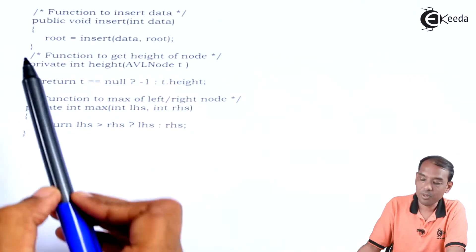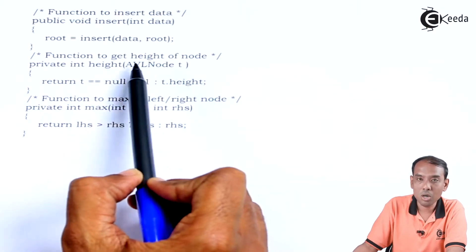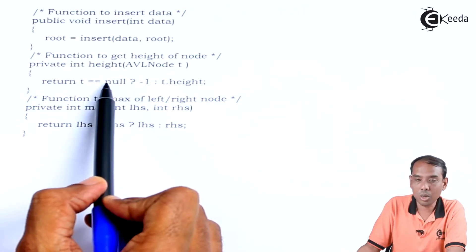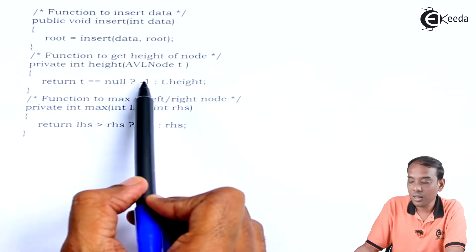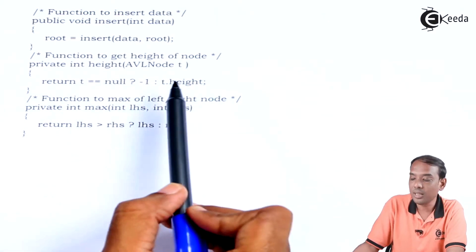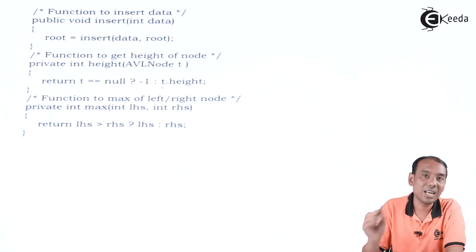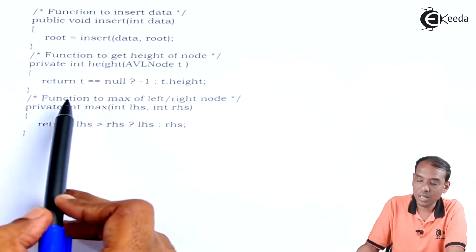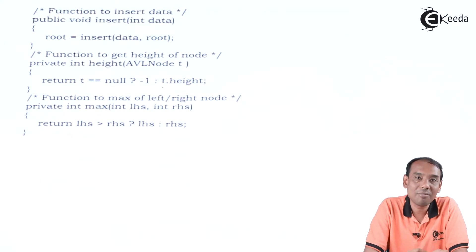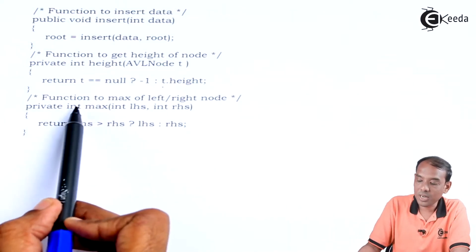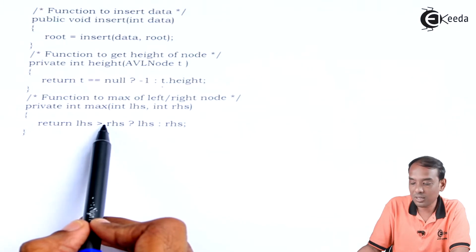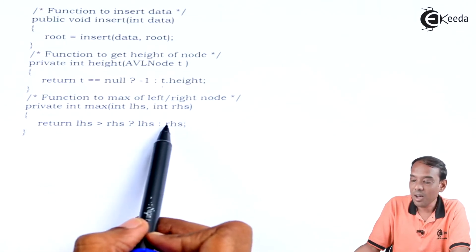We have a helper private int height(AVLNode t), which returns: if t == null, return -1; else return t.height. We also have private int max(int lhs, int rhs), which returns lhs if lhs is greater than rhs, otherwise returns rhs. These helpers are used in calculating and updating the height of each node during insertion.